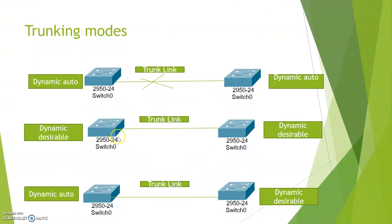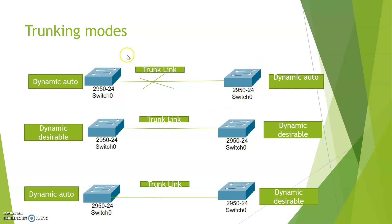What are the scenarios in which a trunk will establish between two switches? Either both should be in dynamic desirable mode, or one should be in dynamic auto and the other in dynamic desirable mode, to form a trunk link. If both switches are in dynamic auto — passive behavior — the trunk will not establish, because each switch waits for the other to initiate the trunk.